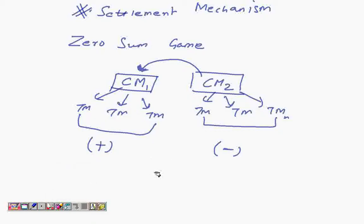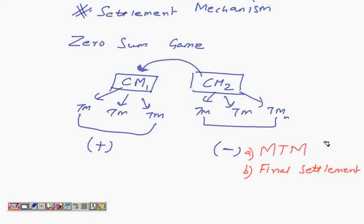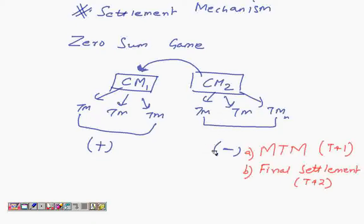This settlement mechanism is achieved on two bases. One is on MTM basis, which is mark to market, which we've already studied and we'll do a little bit more in this chapter. Also on the final settlement basis. Mark to market is done on a T plus one day basis, meaning that every single day, whatever the losses are happening for CM2, on the next very day he has to pay to CM1. A final settlement basis would mean that on T plus two day basis, that is finally on the expiry day, when the final settlement is done and the RVI reference rate is taken as the rate for the final settlement, then CM2, if in losses, would pay to CM1.